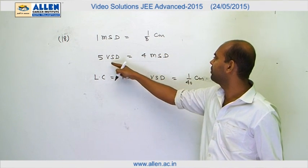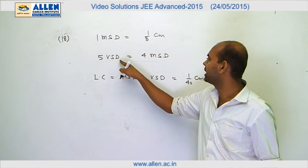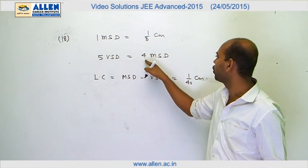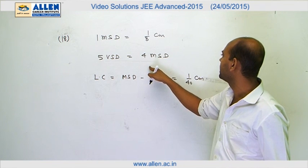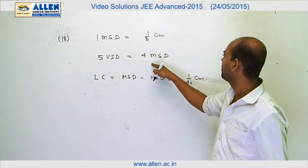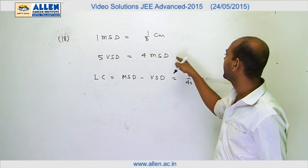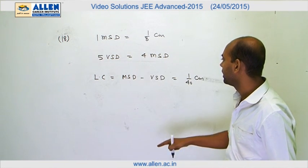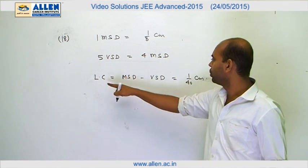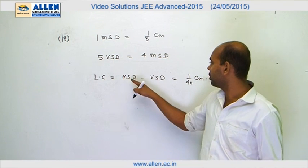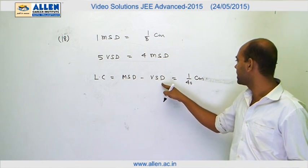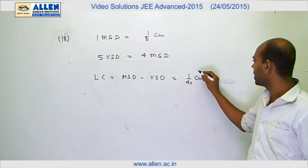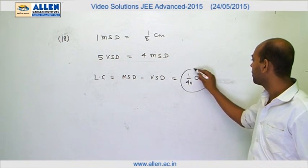So one Vernier scale division equals 4/5 MSD, which comes out to 1/10 centimeter. Since least count equals MSD minus VSD, the least count of the Vernier calipers comes out to 1/40 centimeter.